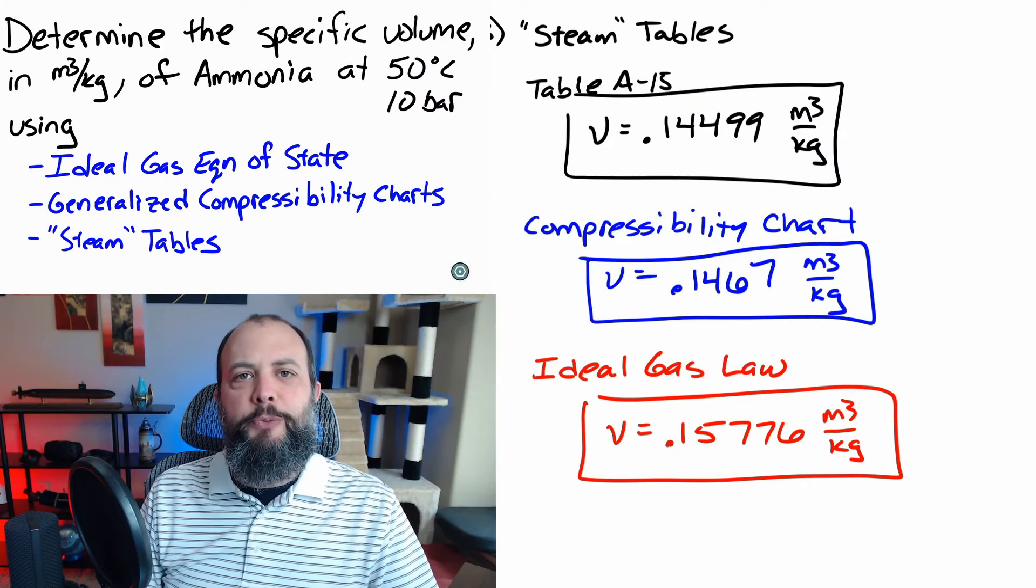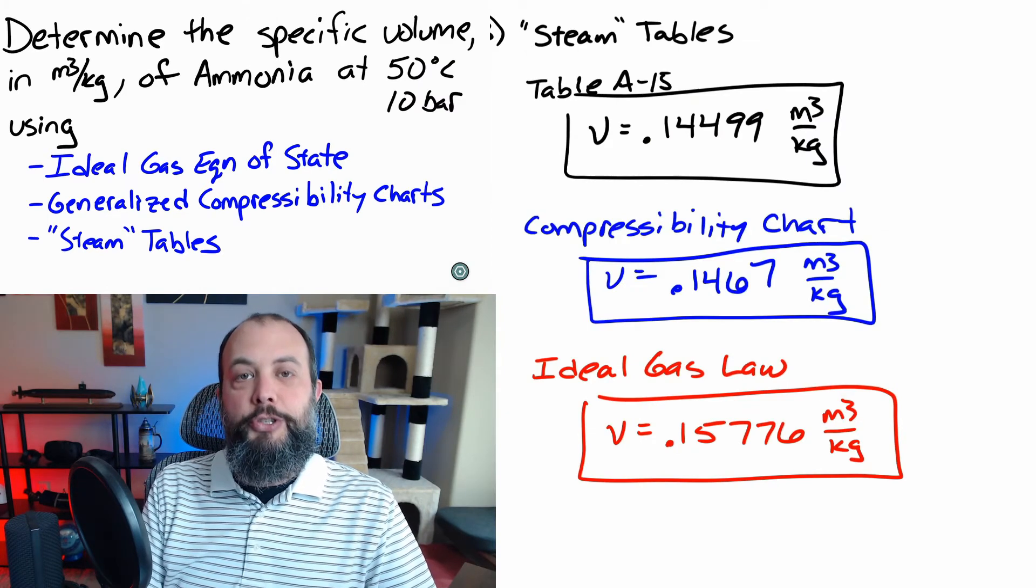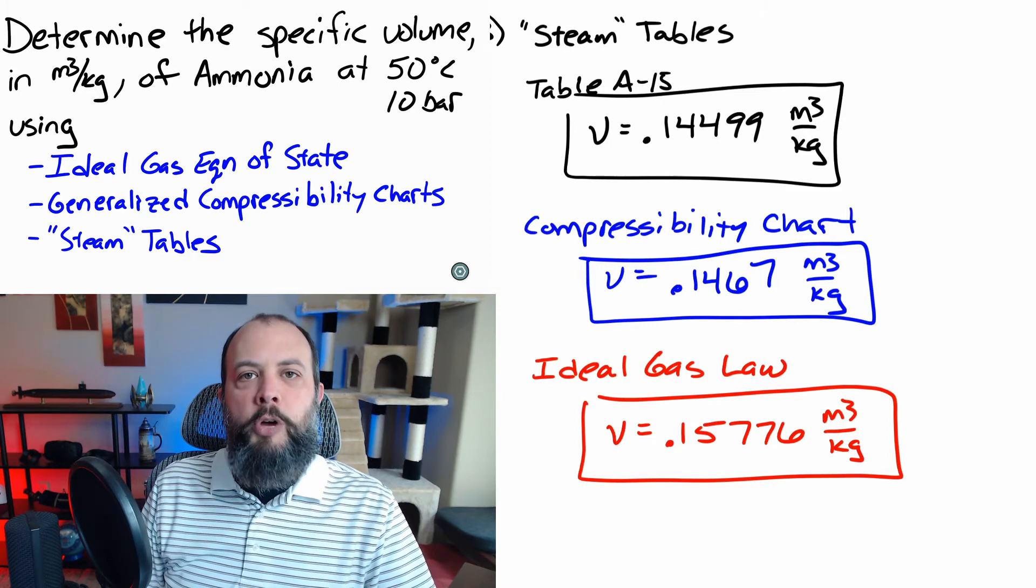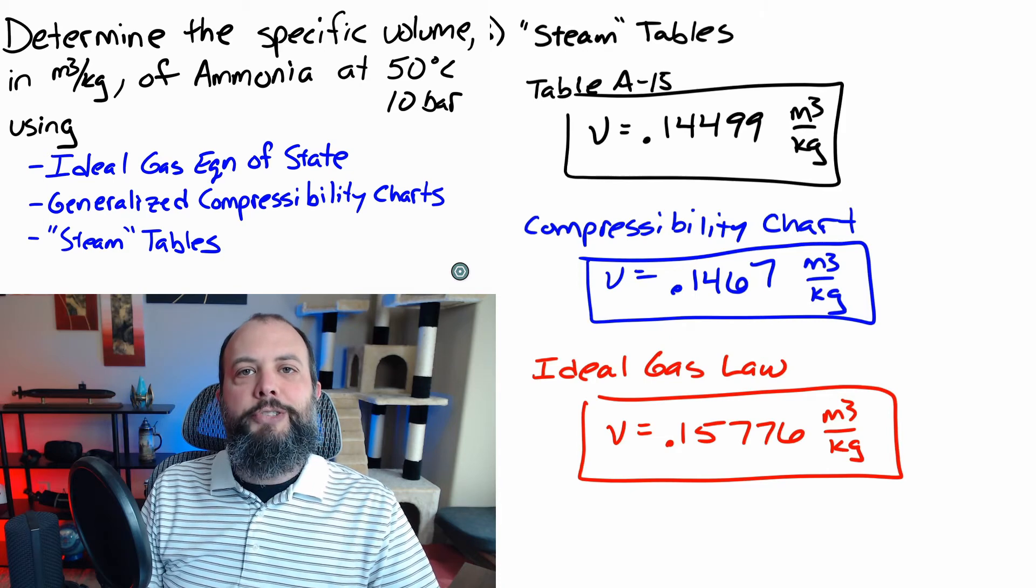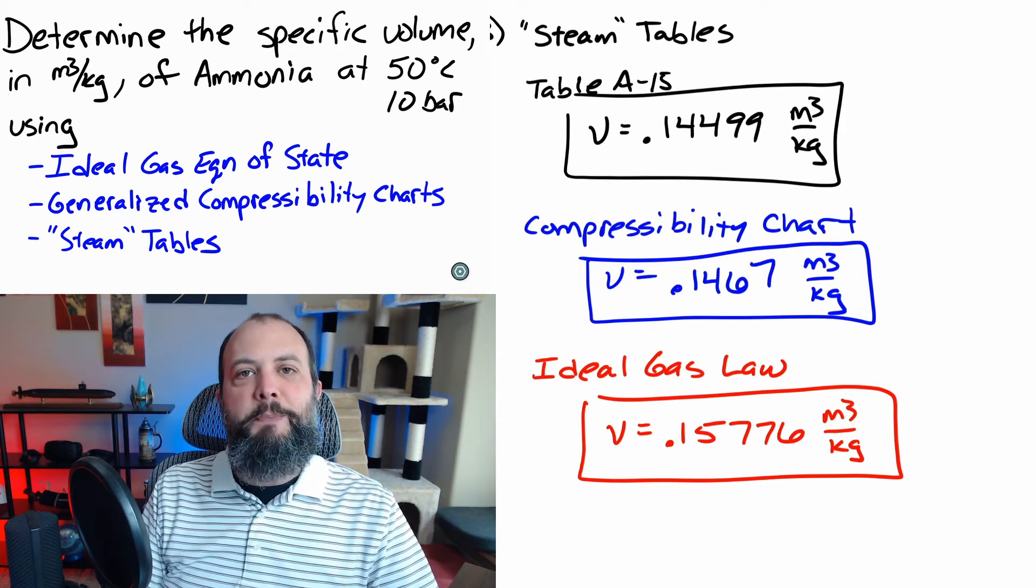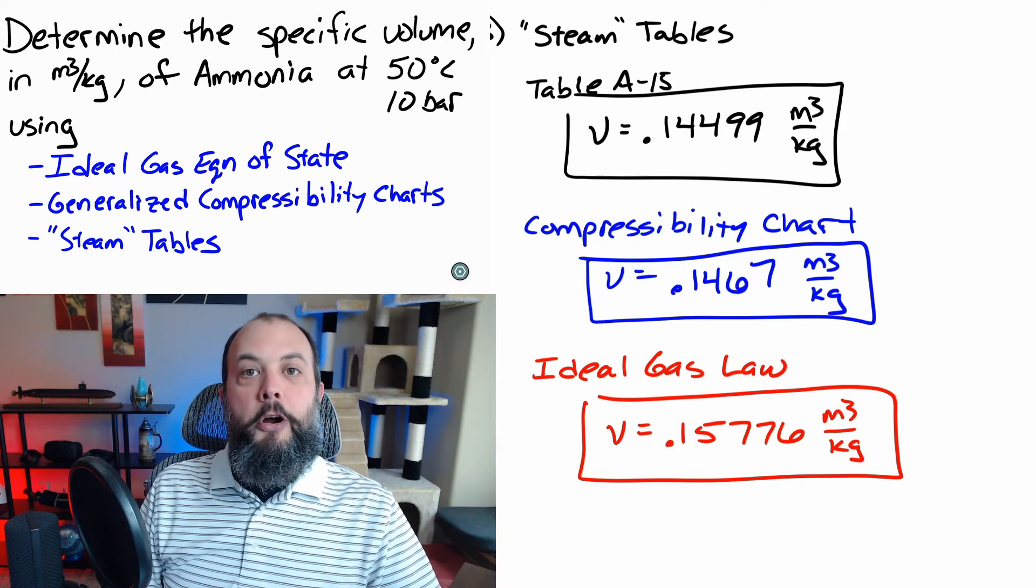It's now the important question. We had one problem that we solved three different ways. Which answer is correct and which method should you use going forward for similar problems? And the correct answer is the steam table. A hundred years ago, engineers performed meticulous experiments to measure all of those values found in the steam tables. They are truth.